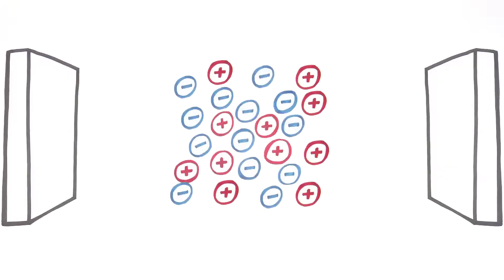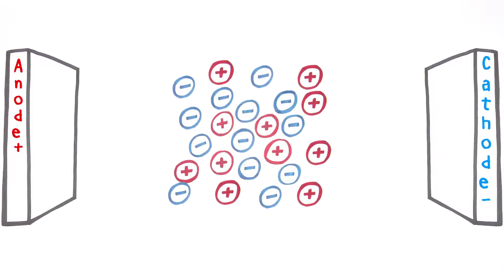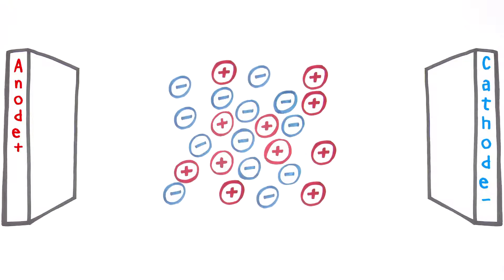Pre-treated water containing positively and negatively charged ions flows into CEDI modules constructed with an anode on one end and a cathode on the other end to provide an electric field. Opposites attract, so positive ions move toward the cathode and negative ions toward the anode.